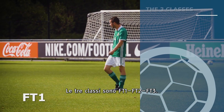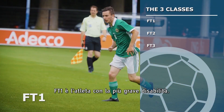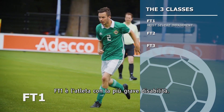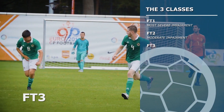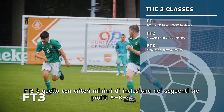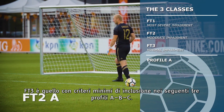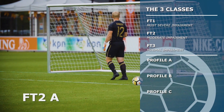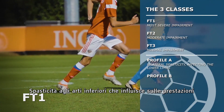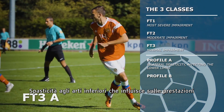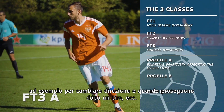The three classes are FT-1, FT-2, and FT-3. FT-1 is the athlete with the most severe impairment, FT-2 has moderate impairment, and FT-3 has the minimal impairment criteria. Within these classes there are three profiles: A, B, and C. Profile A is the athlete with bilateral spasticity in the lower limbs that affects performance, for example when changing direction or following through after a kick.